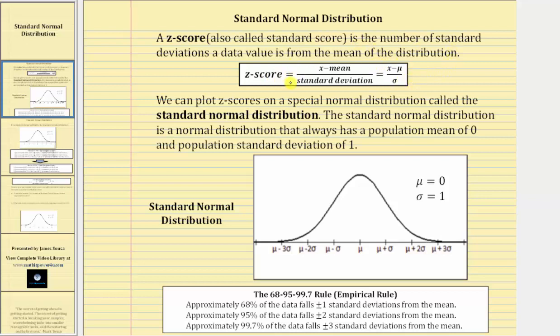We calculate the z-score by determining the difference of the data value and the mean, and then divide by the standard deviation.